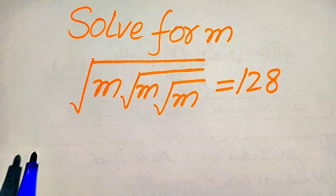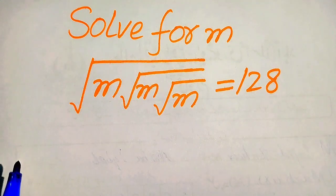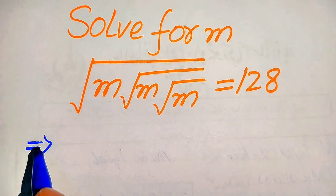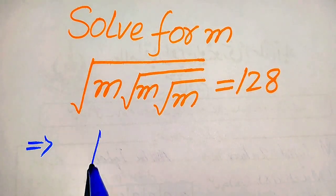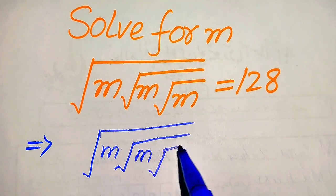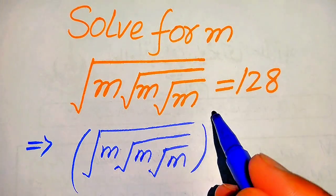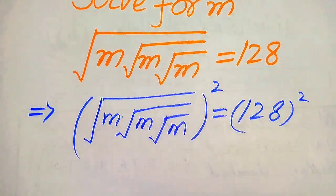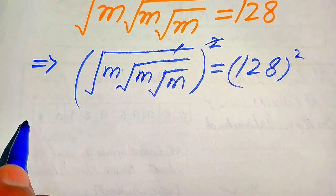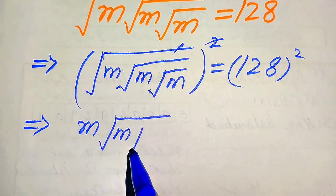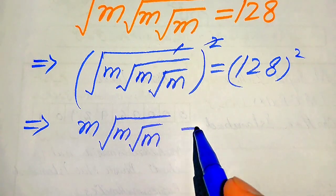First, our goal is to remove all three square root signs, which means we need to square both sides three times. So first we square both sides. After squaring, it will be written as square root of m times square root of m times square root of m, whole squared, equals 128 squared. Now you see this square and this square root cancel, and we get m times square root of m times square root of m equals 128 squared.